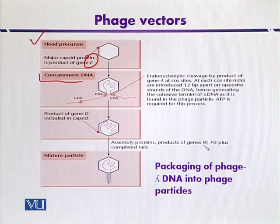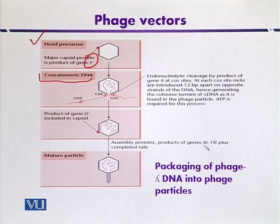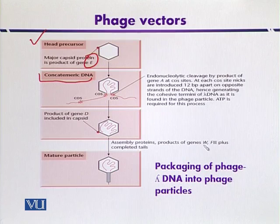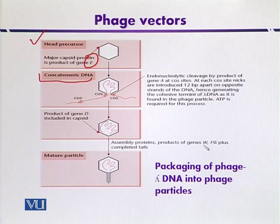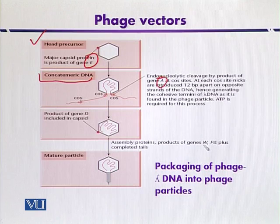Concatemeric DNA is a type of DNA that contains multiple copies of the same DNA. For example, if a lambda genome is there, a number of copies of lambda genomes are present, separated by the cos or cohesive sites. Such type of DNA is called concatemeric DNA. During the packaging step, the product of gene A, which has endonucleolytic activity, cleaves the DNA at the cos site.